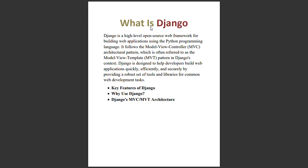Django is an open-source Python web framework. It was originally developed at a national newspaper and has since become a popular choice for web developers. One of Django's standout features is its 'batteries included' philosophy, which means it comes with a wide range of built-in tools and libraries. So what are the key features of Django?